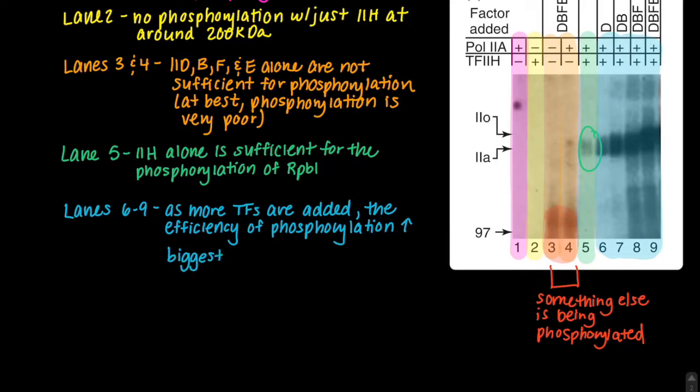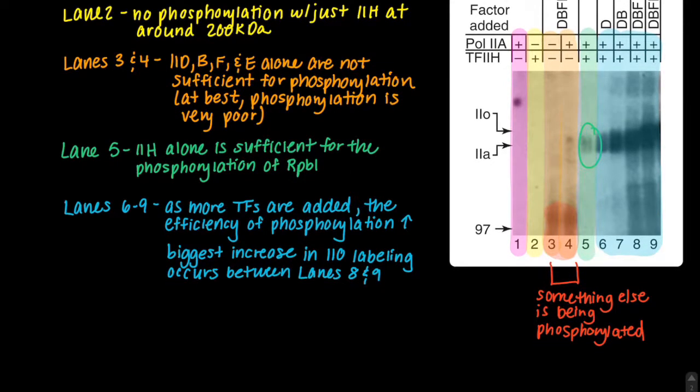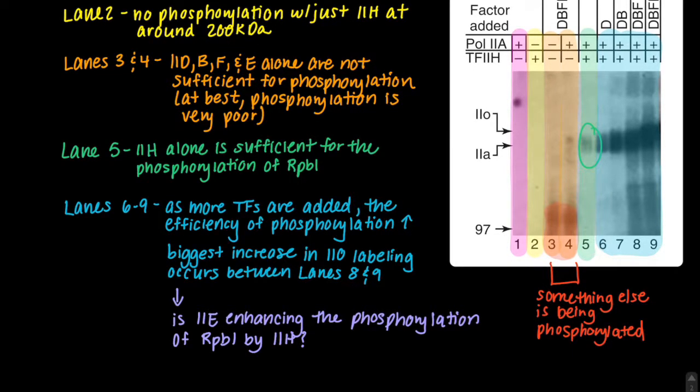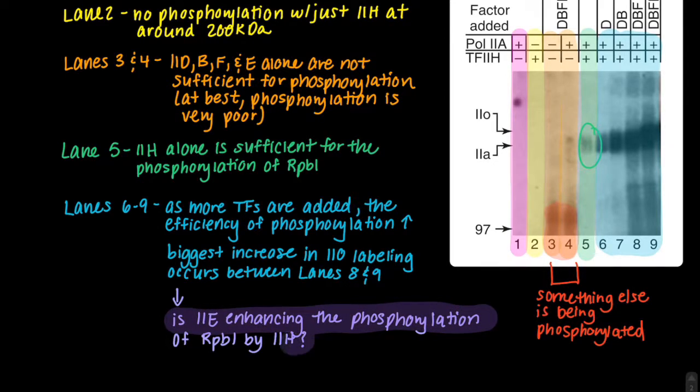Another interesting observation is that the biggest increase in 2O phosphorylation labeling occurs between lanes 8 and 9. This led to the idea that maybe TF2E is somehow enhancing the phosphorylation of RPB1 by TF2H. The next figure will show data to support this idea.